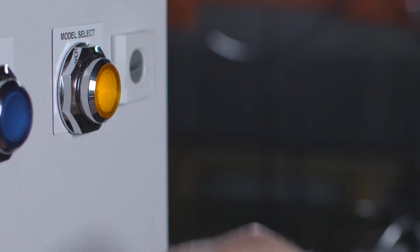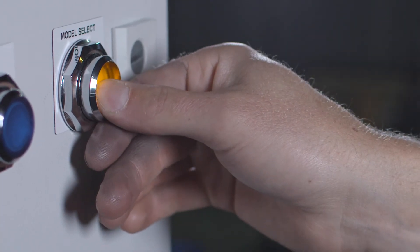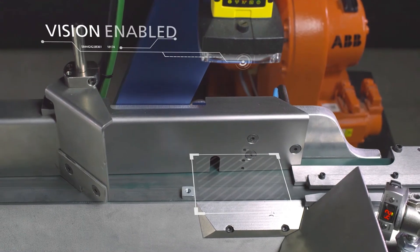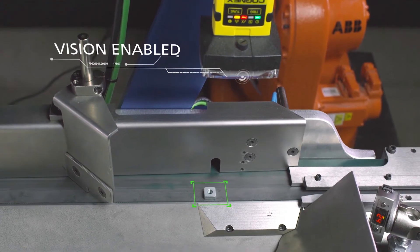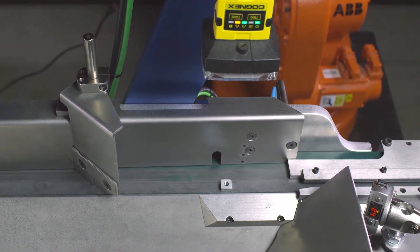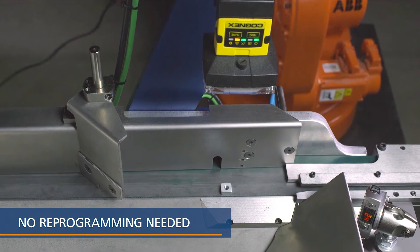Model select on the control unit engages the camera. Because the Vera Feeder is vision-enabled, it can easily recognize the new part or a change in part orientation without reprogramming any changes to the software or programming.